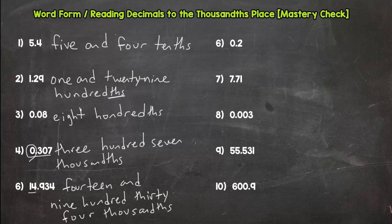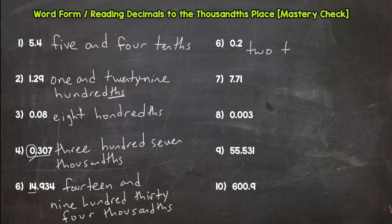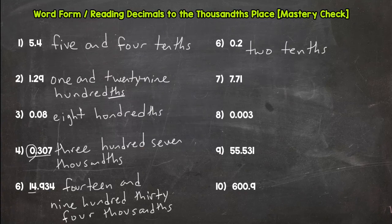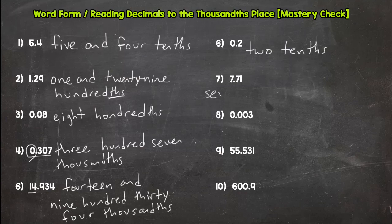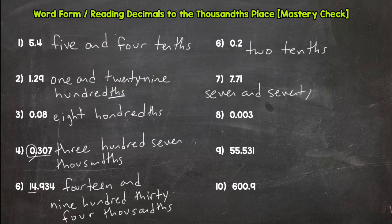Number six is a short one up here: two tenths. Again, you do not need the zero and two tenths—you can just say two tenths. Number seven: seven and seventy-one hundredths.